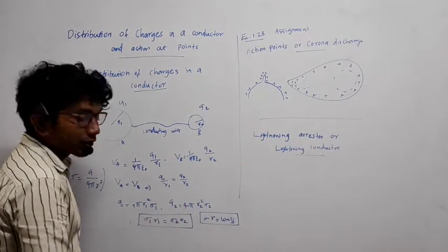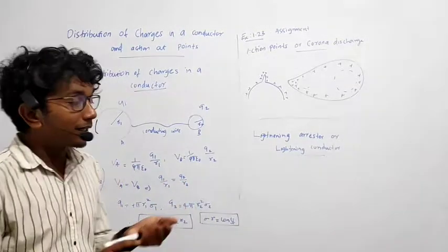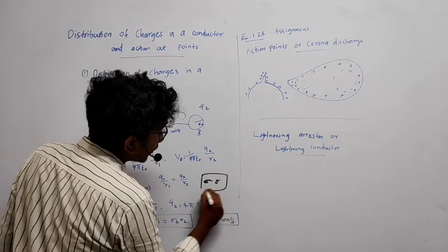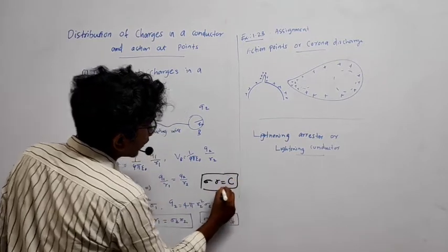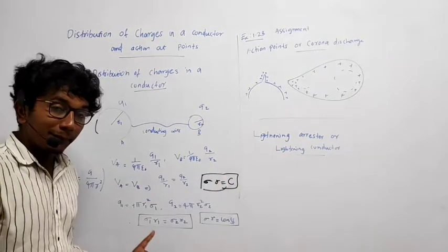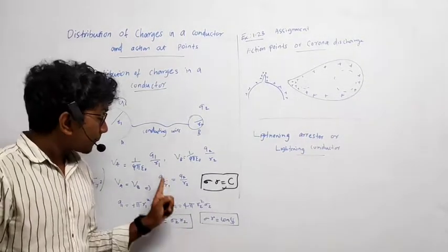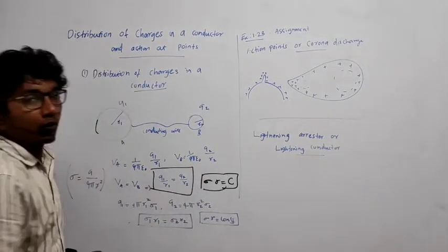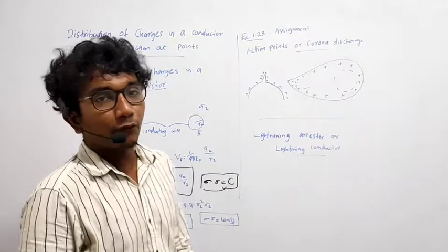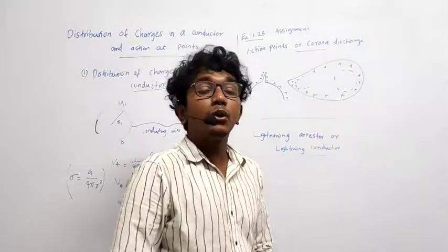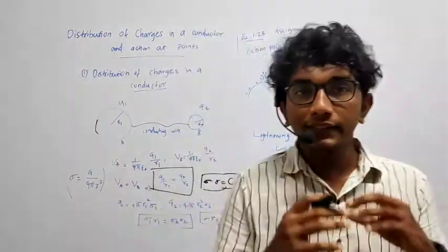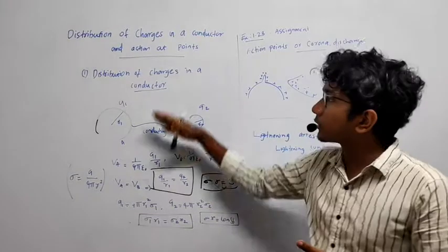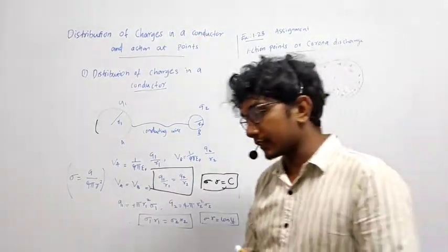The final result is: σ1 × R1 = σ2 × R2, or simply σ × R = constant. So we have two very important equations: Q1/R1 = Q2/R2, and σ × R = constant, where σ is surface charge density. That concludes the topic of distribution of charges in a conductor.